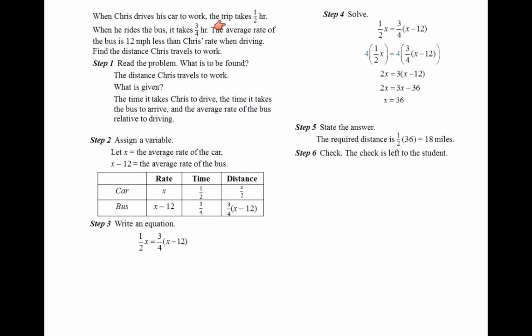When Chris drives his car to work, the trip takes half an hour. When he rides the bus, it takes three-fourths of an hour. The average rate of the bus is 12 miles per hour less than Chris's rate when driving. Find the distance Chris travels to work. Read the question. We're going to assign a variable here. We're going to let x equal the average rate of the car. So x minus 12 would be the average rate of the bus.